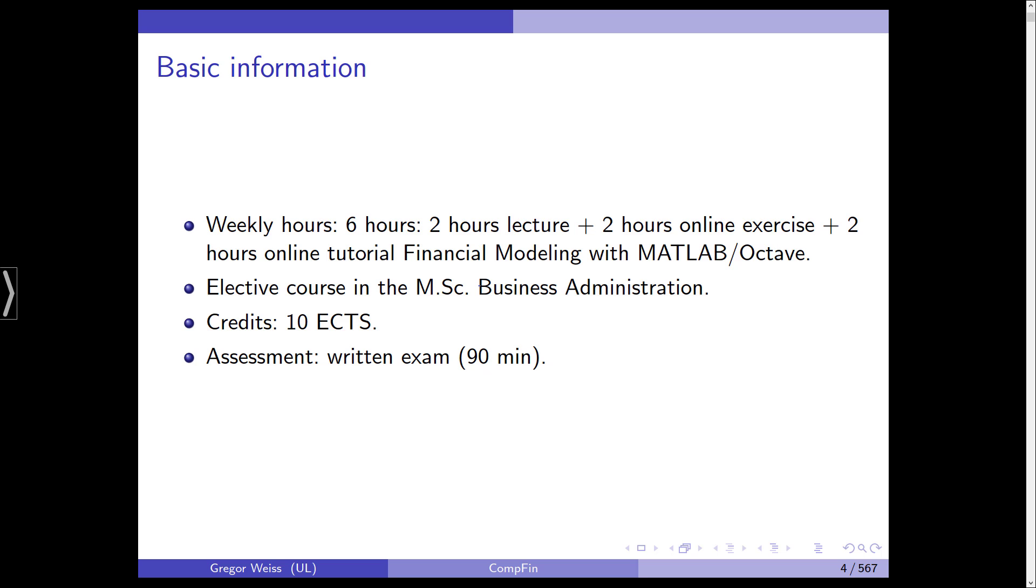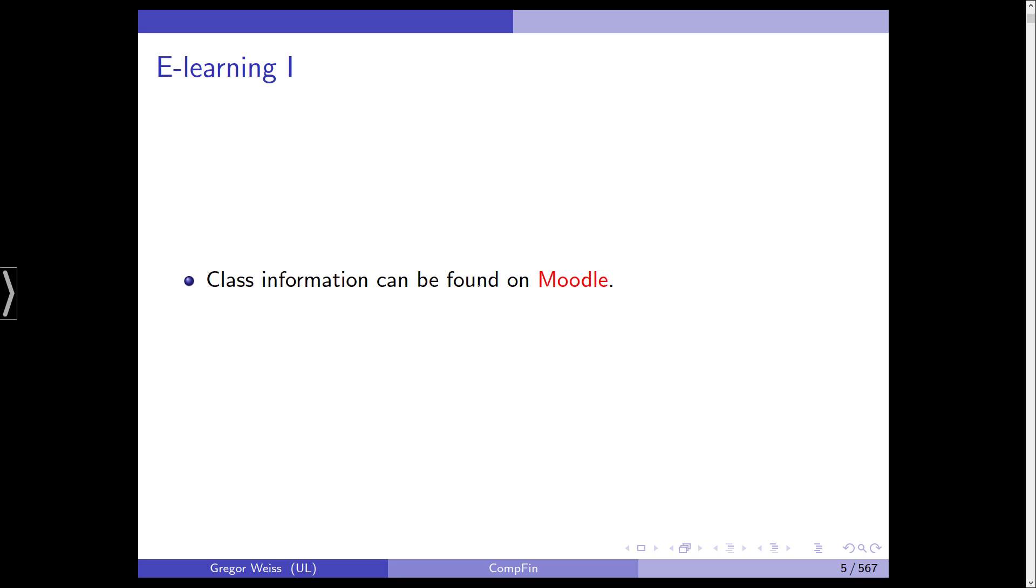The basic information on this class is it's supposed to be a six-hour class. So we have two hours of in-class teaching, two hours of online exercises and tutorials, and also a two-hour online tutorial on financial modeling using MATLAB or Octave. This class is an elective class in our master's degree in business administration, but you can also take this class if you're studying mathematics, computer science or economics. You can get 10 ECTS points and at the end we'll have a written exam of 90 minutes length. So this is what probably you're most interested in if you're taking this class at Leipzig.